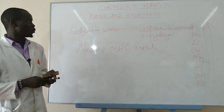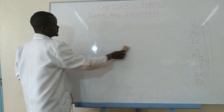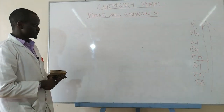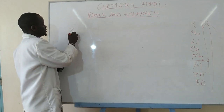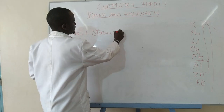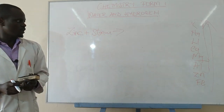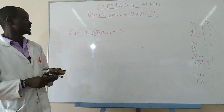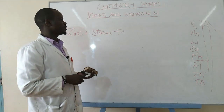Now, what happens when the same elements react with steam? Steam is still water, but water in a gaseous state. If we conduct an experiment on magnesium and steam, we find that magnesium reacts with steam to give an oxide instead of a hydroxide. Zinc will also do the same — zinc reacts with steam to give zinc oxide and a gas.